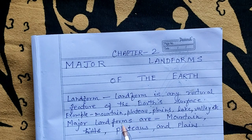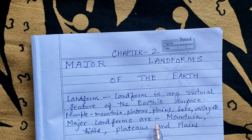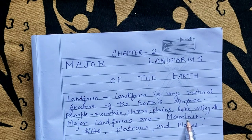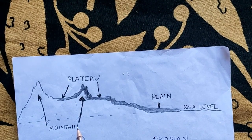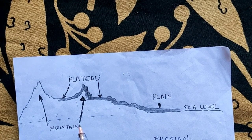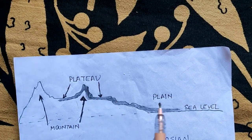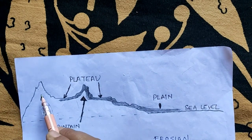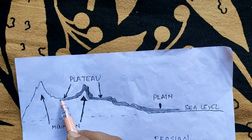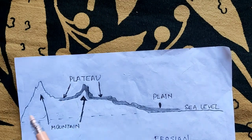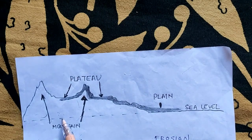Our topic is major landforms, and the three major landforms are mountains, plateaus, and plains. With this picture I will give you a short introduction of each. A mountain is the natural elevation of the earth's surface — it may be narrow at the top and broad at the bottom.